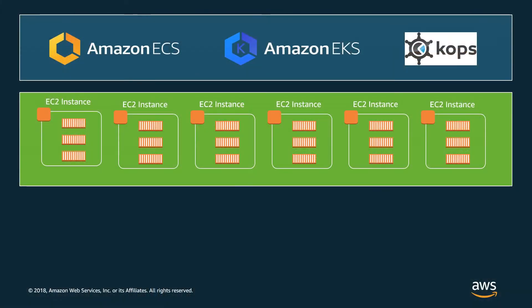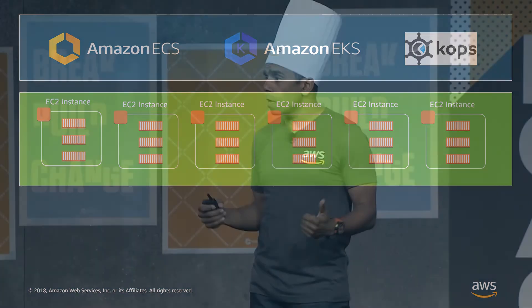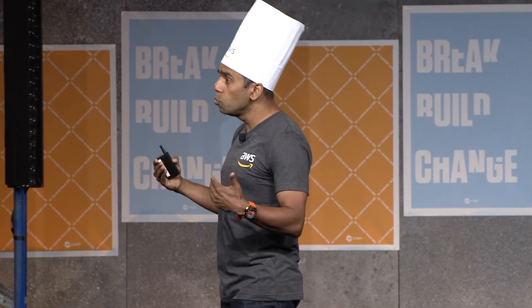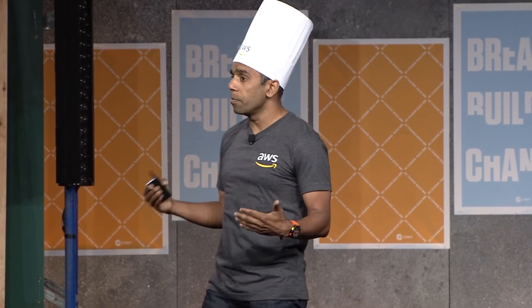Thinking from Amazon's perspective, we have our managed services ECS and EKS. And of course, there is a lot of community effort, such as KOPS, which allows you to create a Kubernetes cluster out of the box. Before we announced EKS, this is a huge shout-out to the community which built KOPS as a CLI to easily create a Kubernetes cluster on AWS.